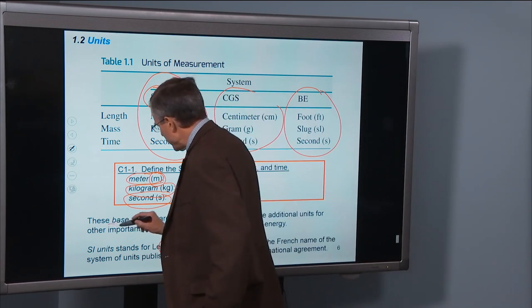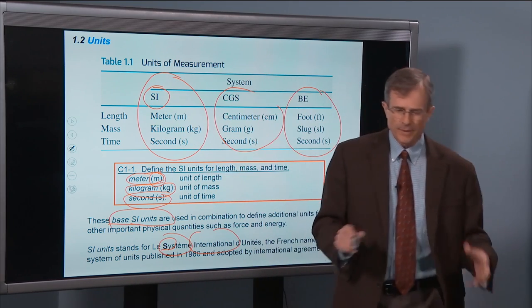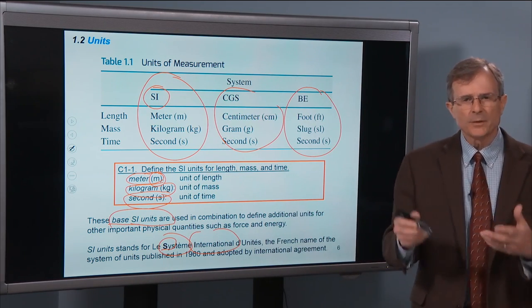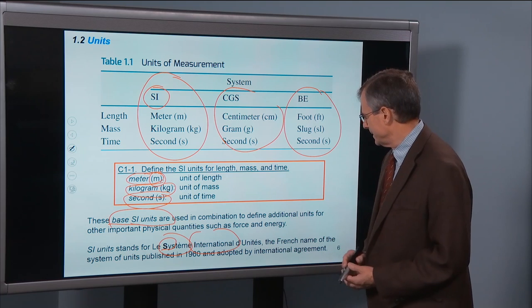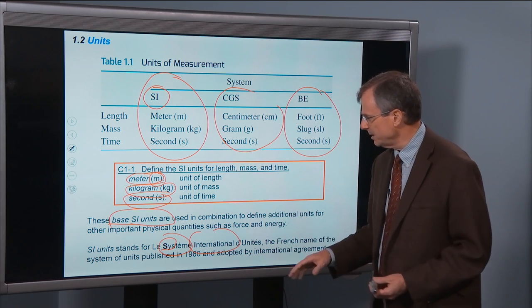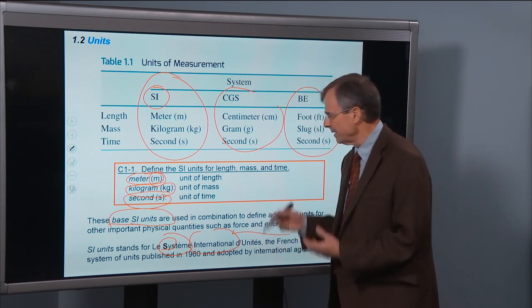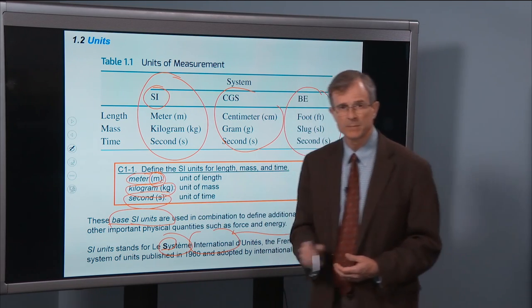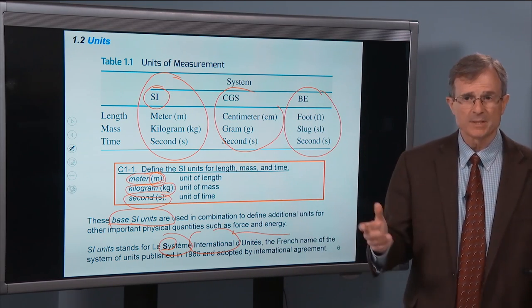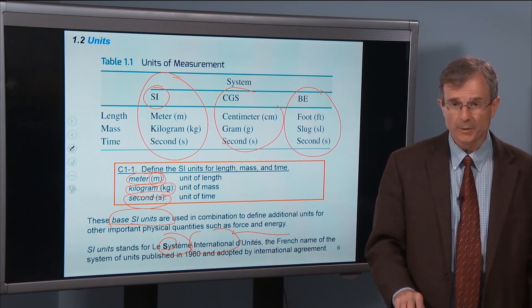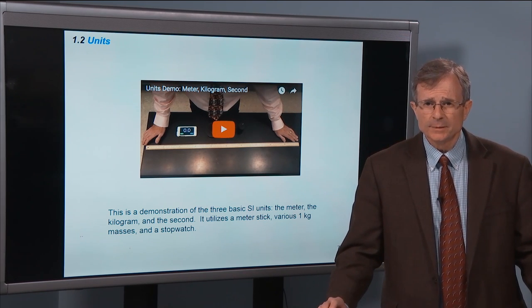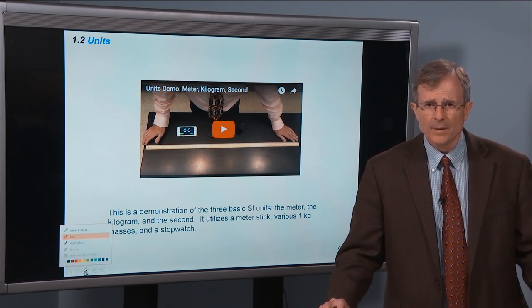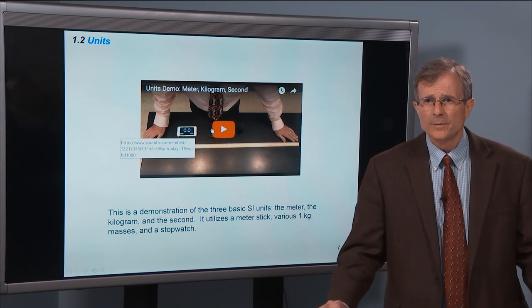Now these are called the base SI units. And the reason is they're used to define most of the other units that we will use during the course. And force and energy, those are measured in units that are based on these three units: meters, kilograms, and seconds. Some people call this the MKS system. It's one way to remember it. Okay, here's a demonstration of the three base SI units.